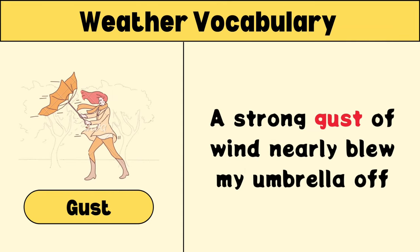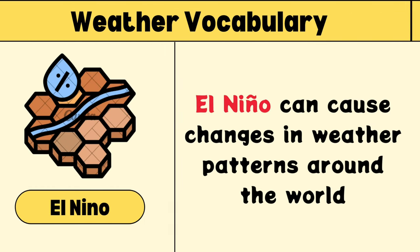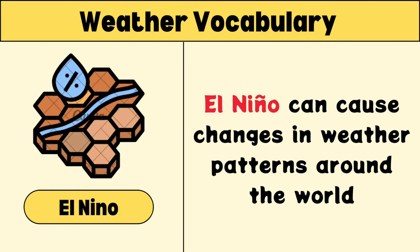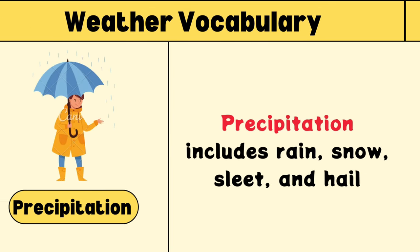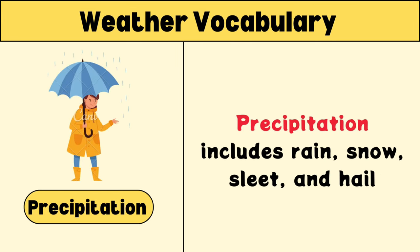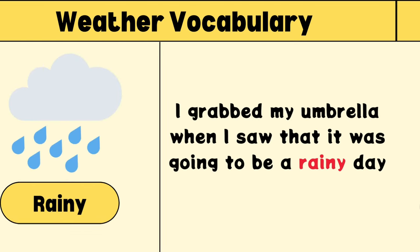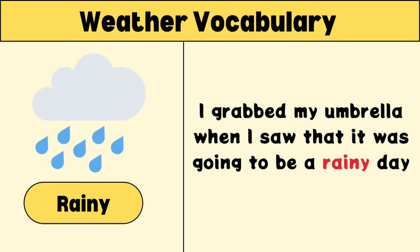Haze: the haze in the air made it difficult to see distant objects. Gust: a strong gust of wind nearly blew my umbrella off. El Niño: El Niño can cause changes in weather patterns around the world. Precipitation: precipitation includes rain, snow, sleet, and hail.